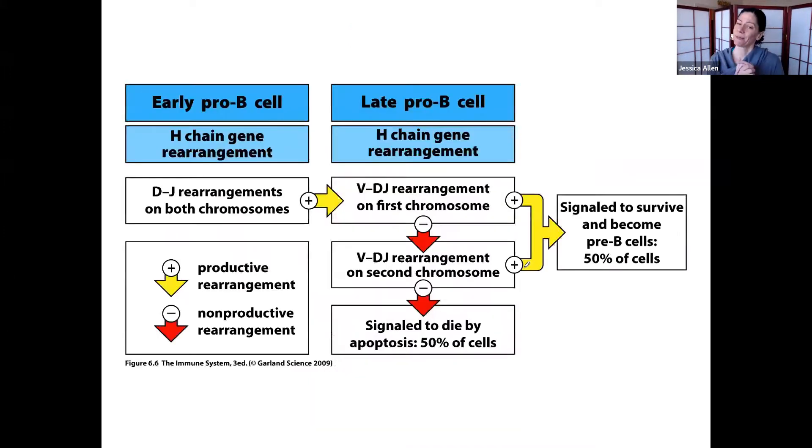If it can't, it has another chance. We actually have two chromosomes, one from our mom, one from our dad. And so, we can rearrange with the other one. We start out by doing one chromosome first. If that's not successful, we do the other. You don't have to worry about the early versus late. We're just going to say they do one at a time.